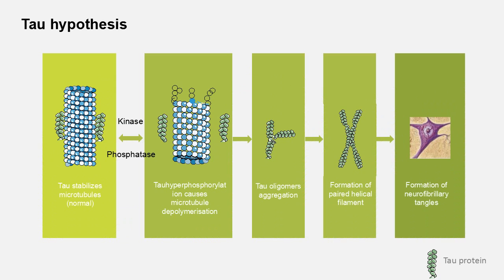The tau hypothesis is another proposed mechanism for Alzheimer's disease. Tau is a protein expressed in neurons that normally functions in the stabilization of microtubules in the cell cytoskeleton. Neurofibrillary tangles occur intracellularly and are composed of paired helical filaments of hyperphosphorylated tau protein. These tangles aberrantly interact with cellular proteins, preventing them from executing their normal functions. Hyperphosphorylation occurs downstream of amyloid beta, and research suggests that toxic tau can enhance amyloid beta production via a feedback loop mechanism.